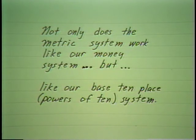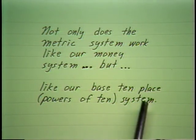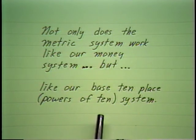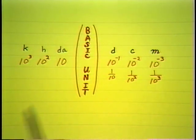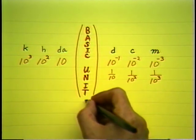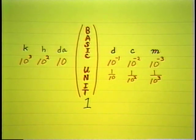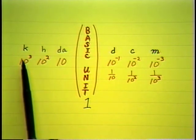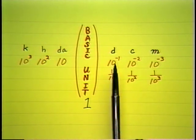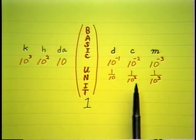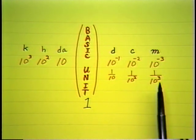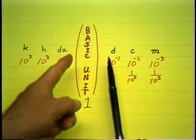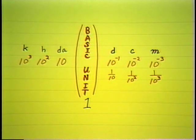Just remember — not only does the metric system work like our money system, but like our base ten or powers of ten system, which means we can move decimal points rather than converting units as we have to in the English system. Our number system has a basic unit of one, then ten of it — deca, a hundred — hecto, a thousand — kilo, a tenth — deci, a hundredth — centi, a thousandth — milli. So it works exactly like the number system.